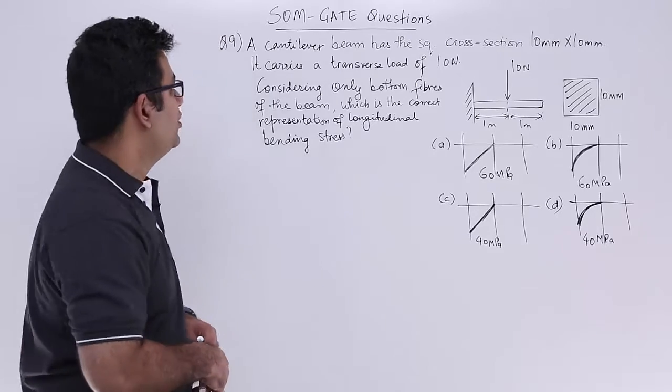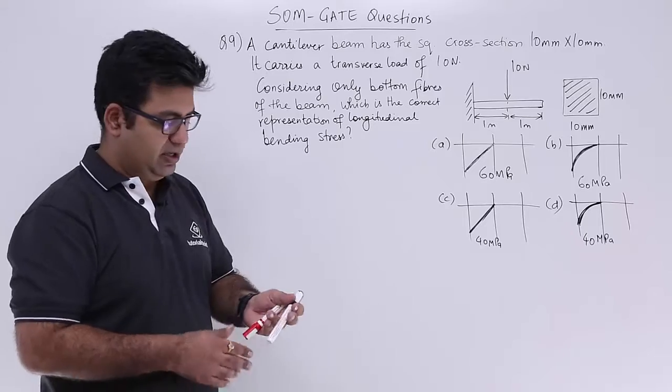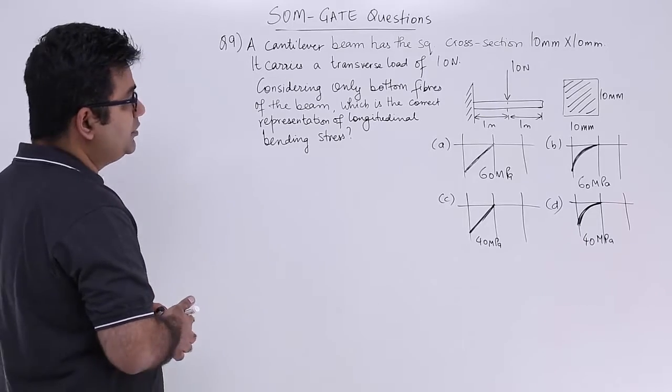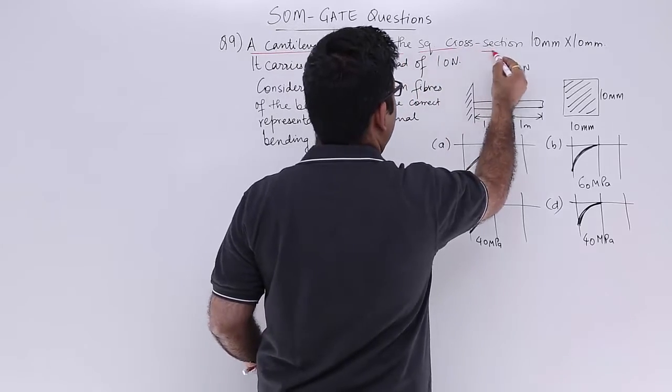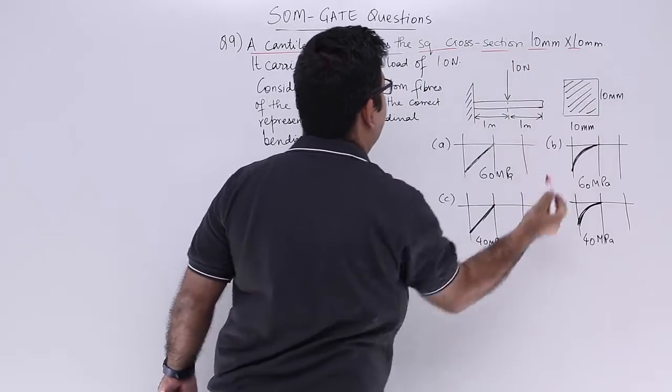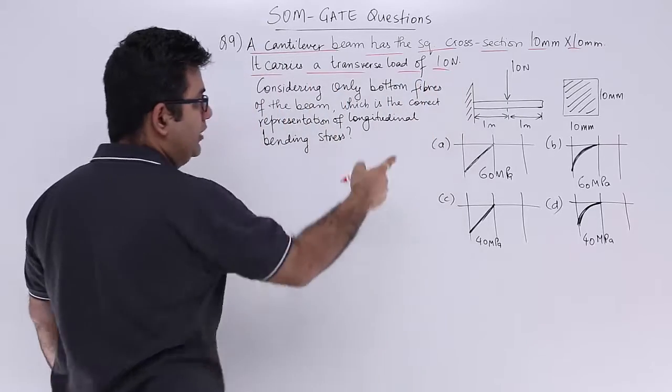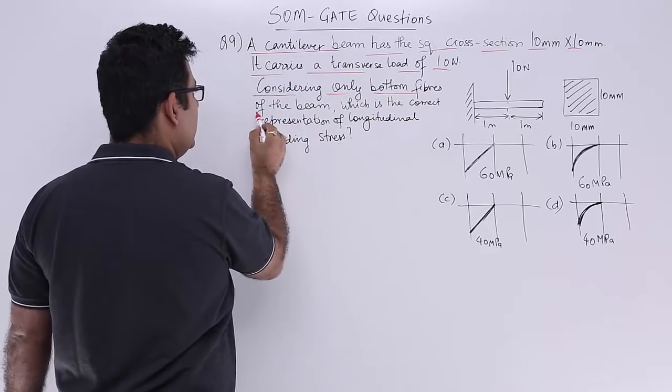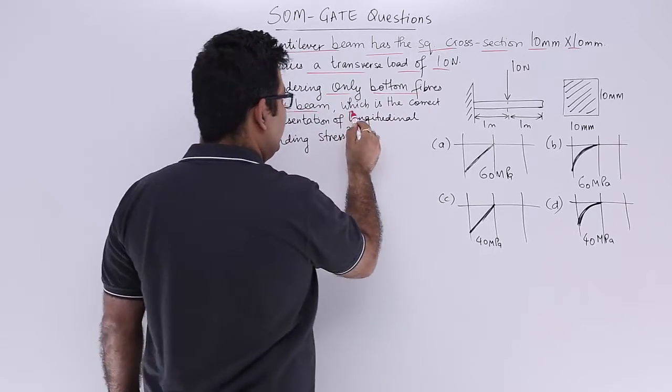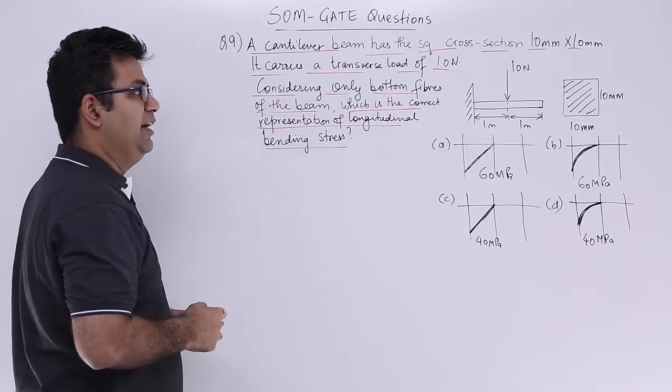Let us now look at question number 9 which is a question on the variation of bending moment diagram. The question says, a cantilever beam has the square cross section 10 mm by 10 mm. It carries a transverse load of 10 newtons. Considering only bottom fibers of the beam, which is the correct representation of longitudinal bending stress.